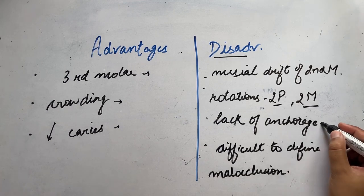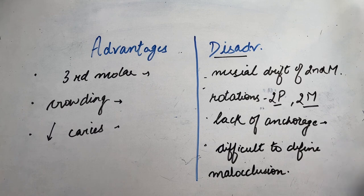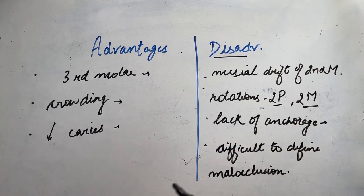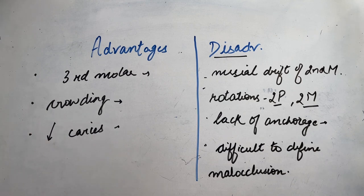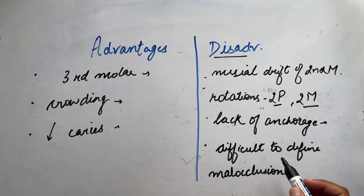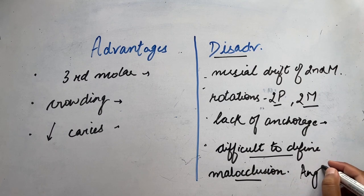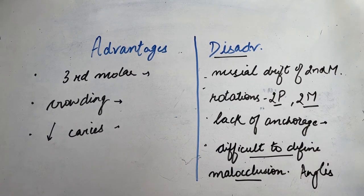Another disadvantage is the lack of anchorage for orthodontic treatment, since first molars are commonly used as anchorage units. Furthermore, first molars are the teeth that define Angle's malocclusion — Class I, Class II, and Class III — so extracting all first molars makes it difficult to classify malocclusion according to Angle's system. Thanks for watching everyone, see you in the next part.